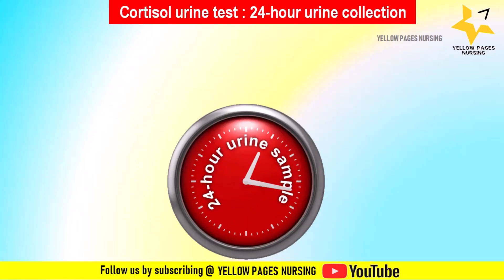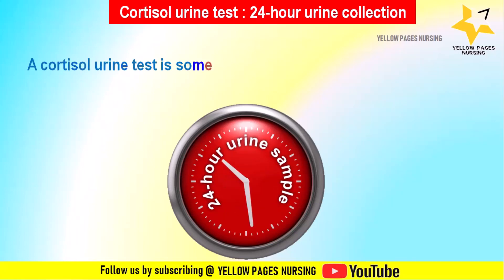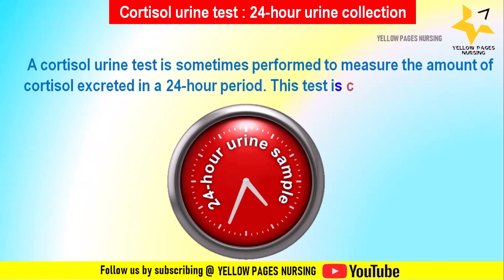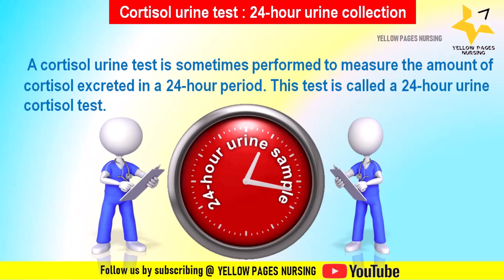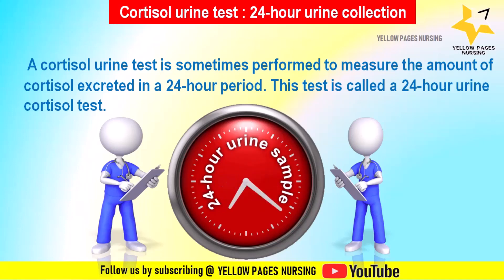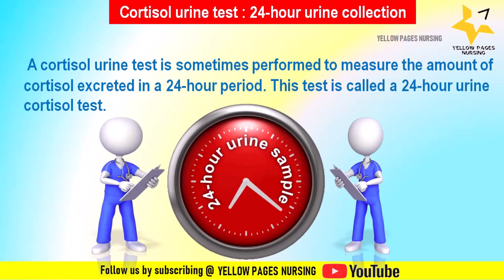Next comes the cortisol urine test from a 24-hour urine collection. A cortisol urine test is performed to measure the amount of cortisol excreted over a 24-hour period, and it is called the 24-hour urine cortisol test. Nursing considerations include using specific containers provided for collection. If the patient is on a Foley catheter, empty the urine drainage bag into the 24-hour urine sample container at frequent intervals over 24 hours. If the patient is self-voiding, ask them to use a urinal and empty it into the 24-hour urine sample container.